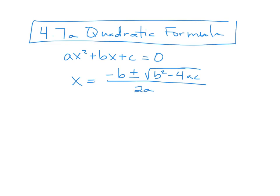Here's your song: x equals negative b plus or minus the square root of b squared minus 4ac, all over 2a. Pop goes the weasel.